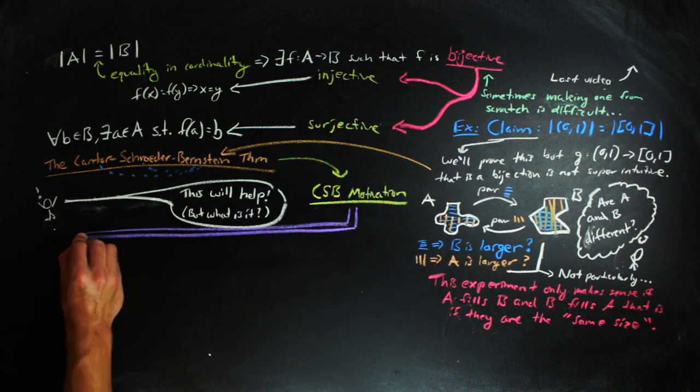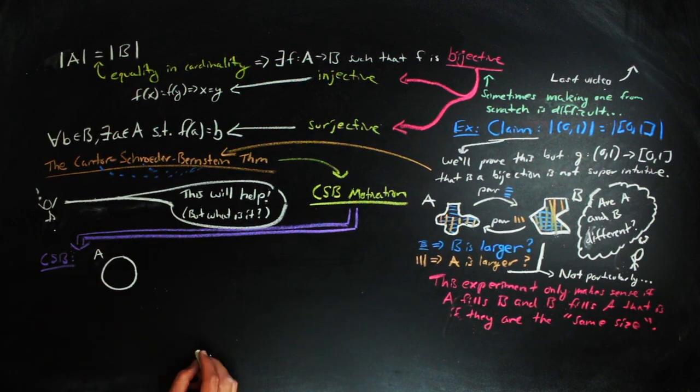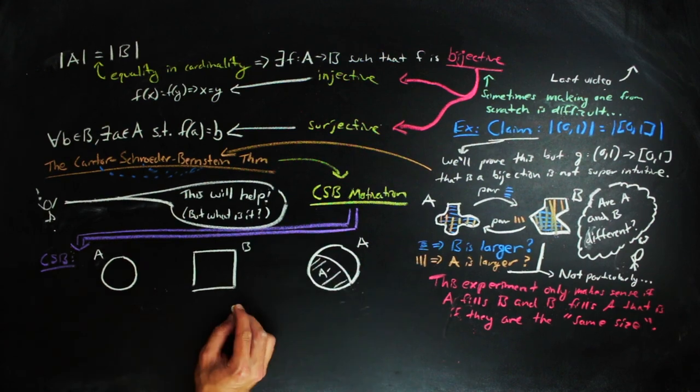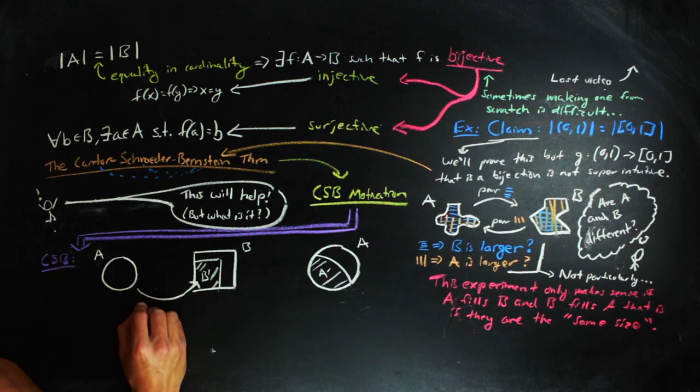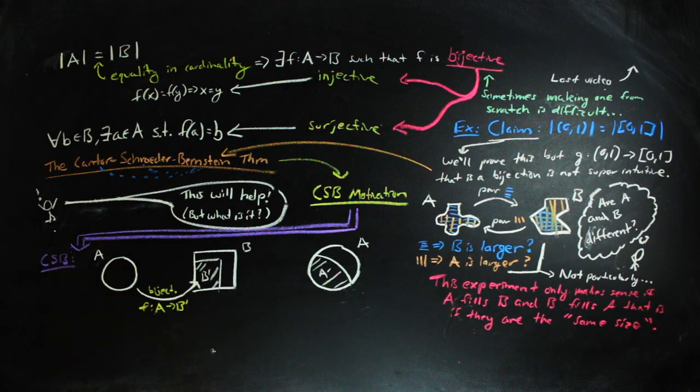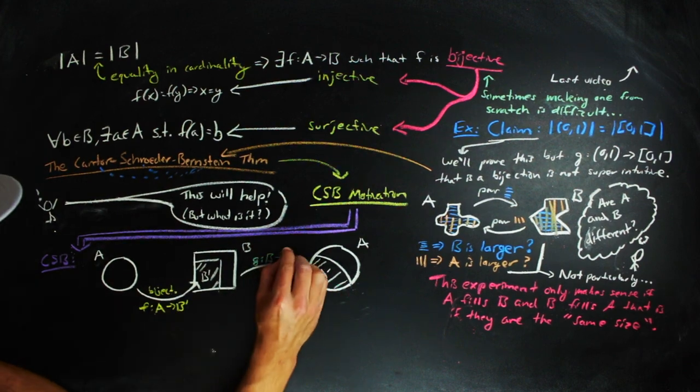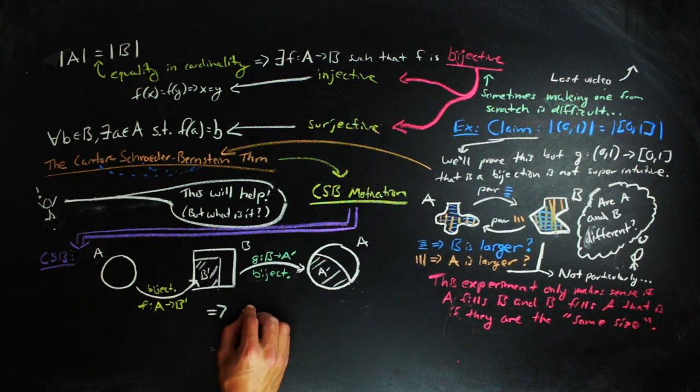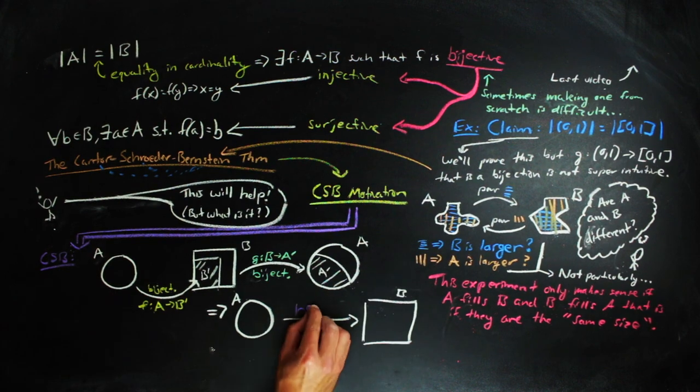Now when we're translating this back to the mathematical setting, our containers A and B are our sets. And the act of pouring the volume of one into the other would be the use of a bijection. Thus, we can state the Cantor-Schroeder-Bernstein theorem pictorially like so.